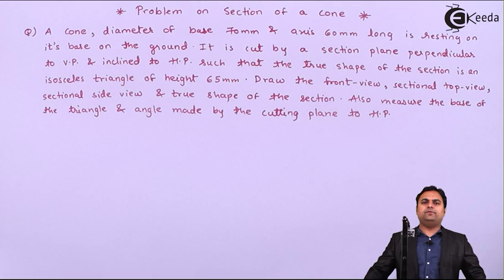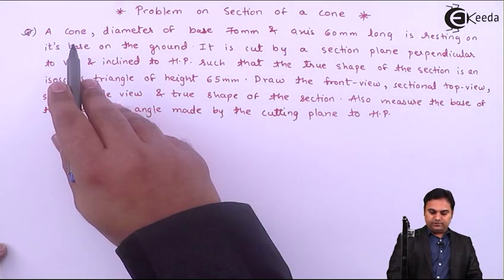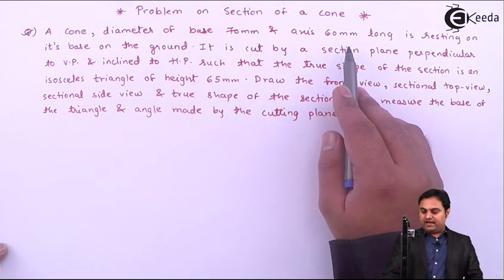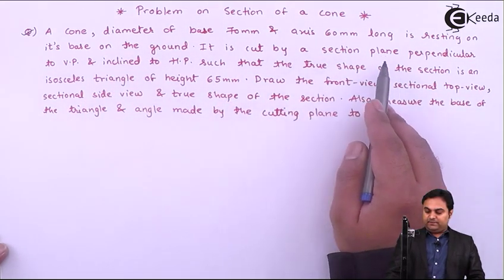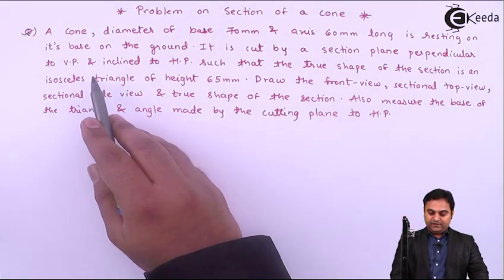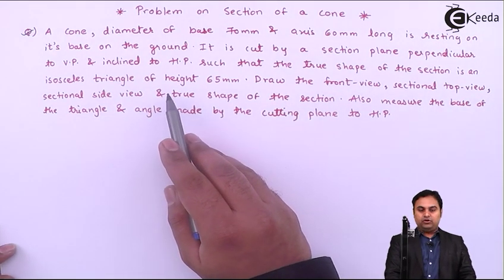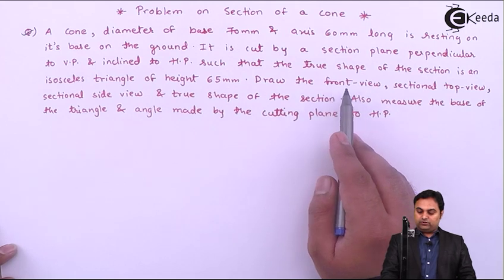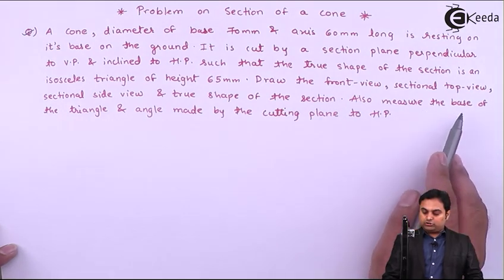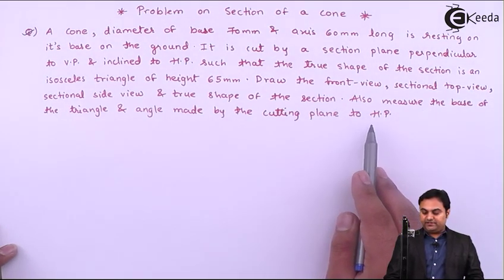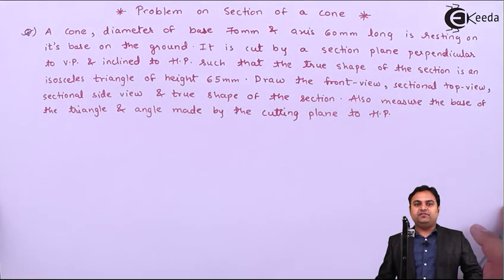Hello friends, in this video we will see a problem on section of a cone. The question is: a cone with diameter of base 70 mm and axis 60 mm long is resting on its base on the ground. It is cut by a section plane perpendicular to VP and inclined to HP such that the true shape of the section is an isosceles triangle of height 65 mm. Draw the front view, sectional top view, sectional side view, and true shape of the section. Also measure the base of the triangle and the angle made by the cutting plane to HP.